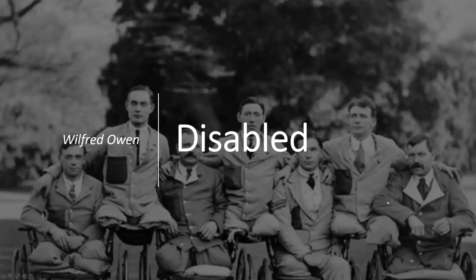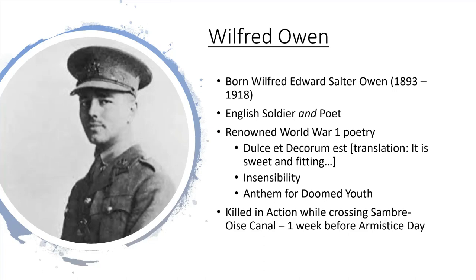As you can surmise from the background picture, the poem is about disabled people and, in particular, disabled war veterans. Our poet's name is Wilfred Owen. He was an English soldier and a poet — he picked up both the pen and the sword. He wrote a number of very famous World War I poems, including 'Dulce et Decorum Est,' 'Insensibility,' 'Anthem for Doomed Youth,' and others. He wrote these during his time serving in World War I.